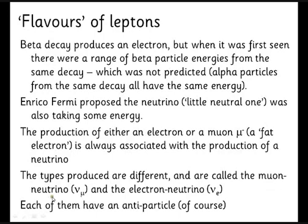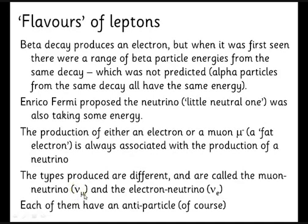There are two sorts of neutrinos we need to know: muon neutrinos, associated with the production of a muon, and electron neutrinos, which you get when you produce an electron. So beta decay gives an electron neutrino; muon decay gives a muon neutrino. All of these have antiparticles. An annoying detail: the mu-minus antiparticle is written as mu-plus with no bar to indicate it's an antiparticle. If you see mu-plus or e-plus, those are antiparticles. For neutrinos, since they're neutral, you write a bar over the symbol — nu-bar or nu-mu-bar.